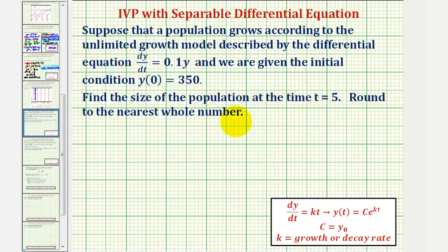and round to the nearest whole number. We solved a similar differential equation earlier using separation of variables. But we also recognize there's a shortcut for finding the general and particular solution when we have a differential equation in this form.